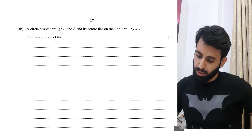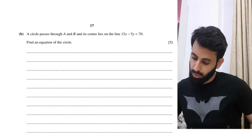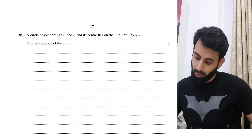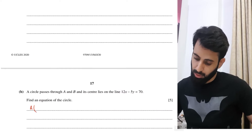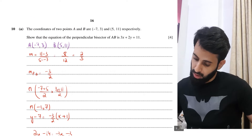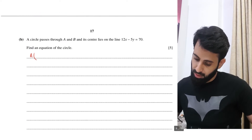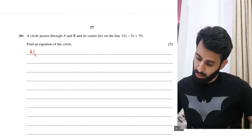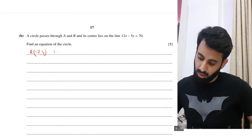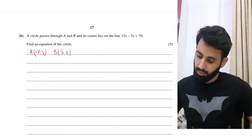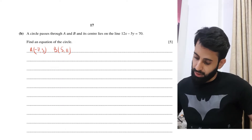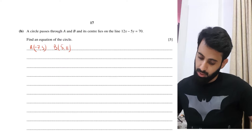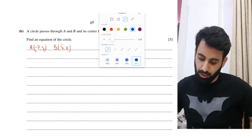Part B: A circle passes through A(-7, 3) and B(5, 11), and its center lies on the line 12x - 5y = 70. Find an equation of the circle. This part is worth five marks.